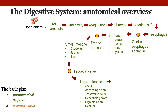The large intestine is divided into multiple sections. Partially digested food moves through the cecum, ascending colon, transverse colon, descending colon, sigmoid colon, and then the rectum. From there it makes its way into the anal canal, passes through the anal sphincter, and the waste is excreted through the anus.